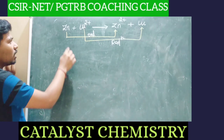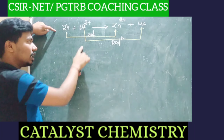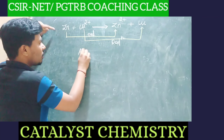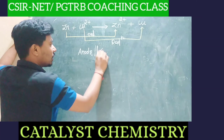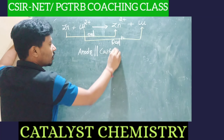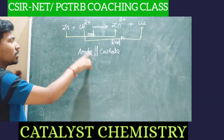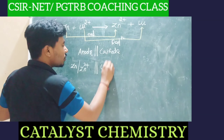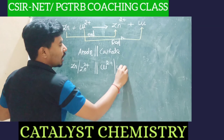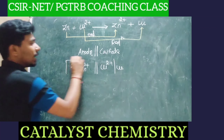In this cell, it is represented as: anode — double slash — that is the salt bridge — then cathode. Anode reaction is oxidation: zinc is converted into Zn²⁺, so zinc slash Zn²⁺, double slash (salt bridge). Next, cathode: reduction — copper 2-plus ion is converted into copper. We have to gain the electrons.